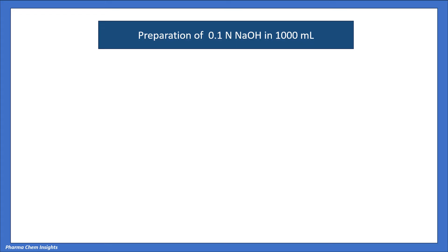For preparation of 0.1 normal NaOH in 1000 ml, we have data. Normality of NaOH is 0.1 normal. Volume to be prepared is 1000 ml. Equivalent weight of NaOH is 40.